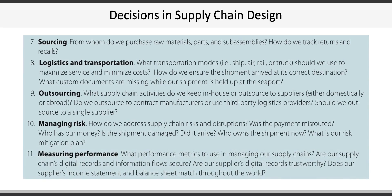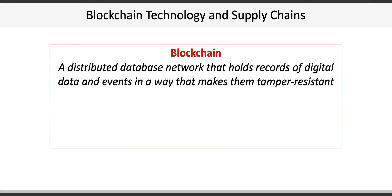The last set of questions is about measuring performance: what performance metrics do we use on our supply chain? Are our suppliers' digital records trustworthy? The areas of technology and risk management, along with recent advancements in transaction security, has resulted in the creation of something called blockchain — a distributed database network that holds records of digital data and events in a way that makes them tamper-resistant.